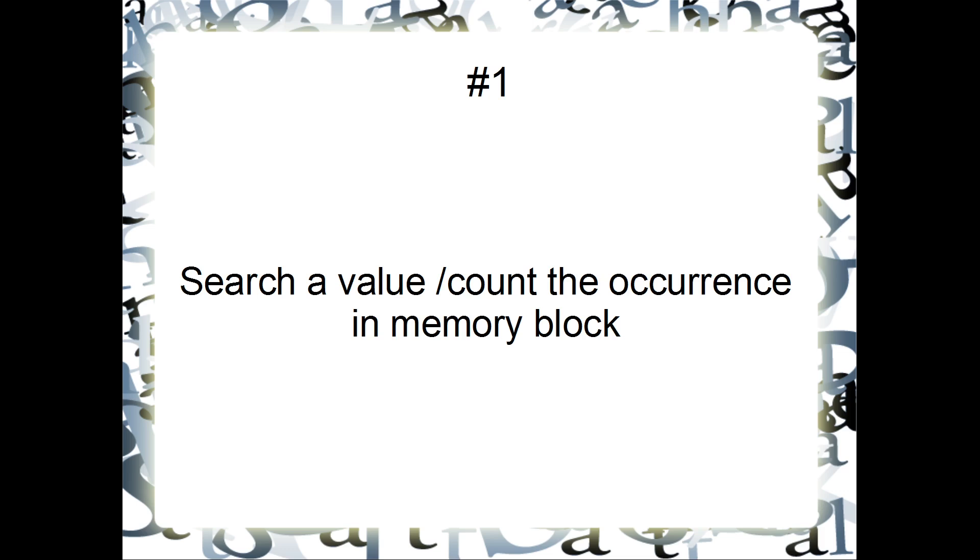Second option is count the occurrence, means how many times a particular value occurs in a memory block that you have to count. So little modification is required, you may find the value multiple times, you have to keep the count of how many times you find, and then that count you have to store in memory location.